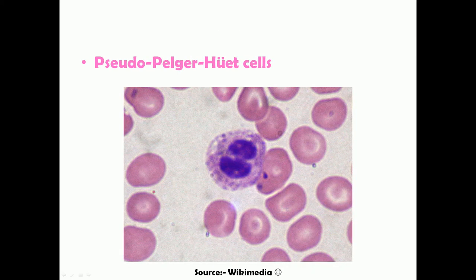This cell is the pseudo-Pelger-Huët cell. Normally in a neutrophil the nucleus is multi-lobed, but in pseudo-Pelger-Huët cells the nucleus in neutrophils is just bi-lobed, making it different from a normal neutrophil, as you can see in this picture.